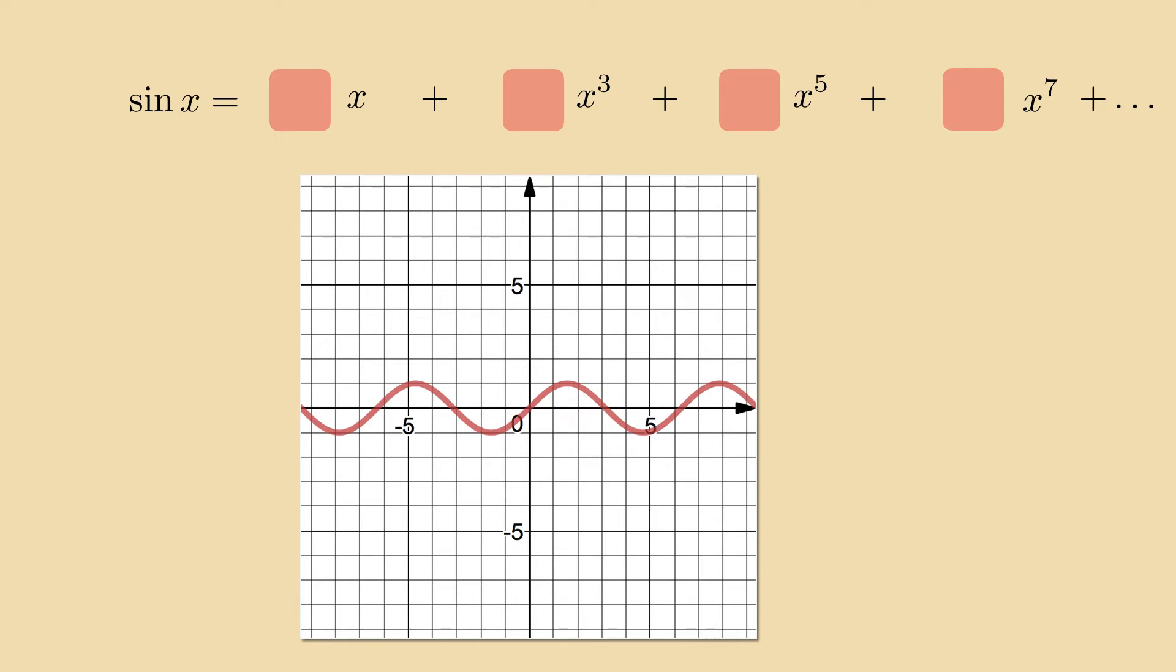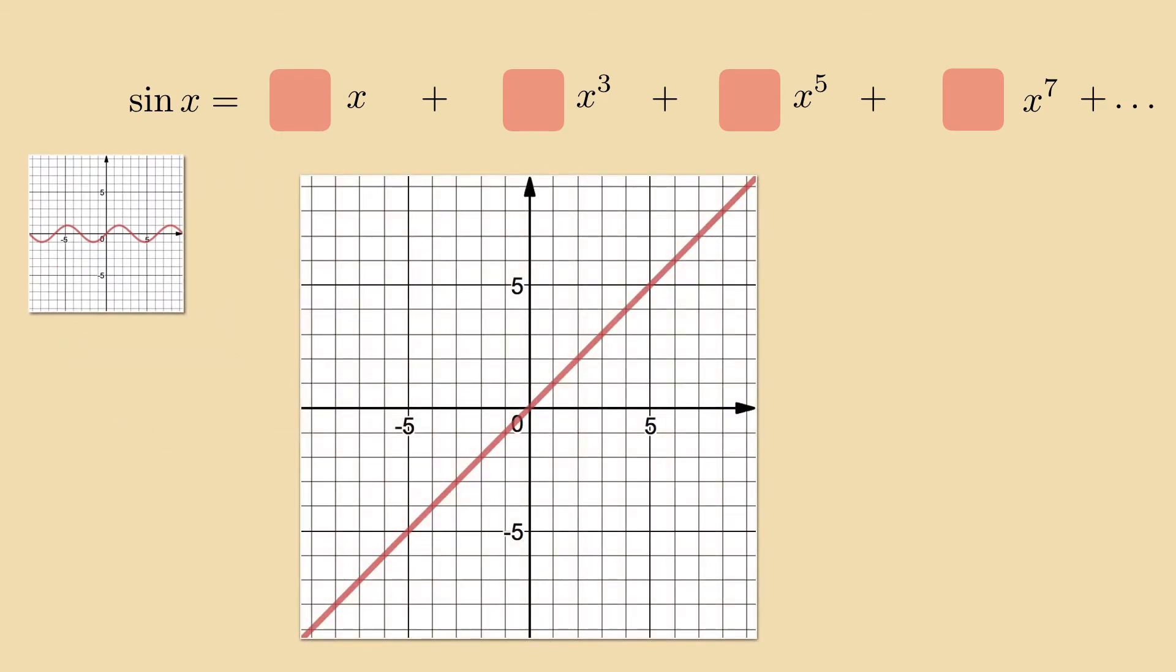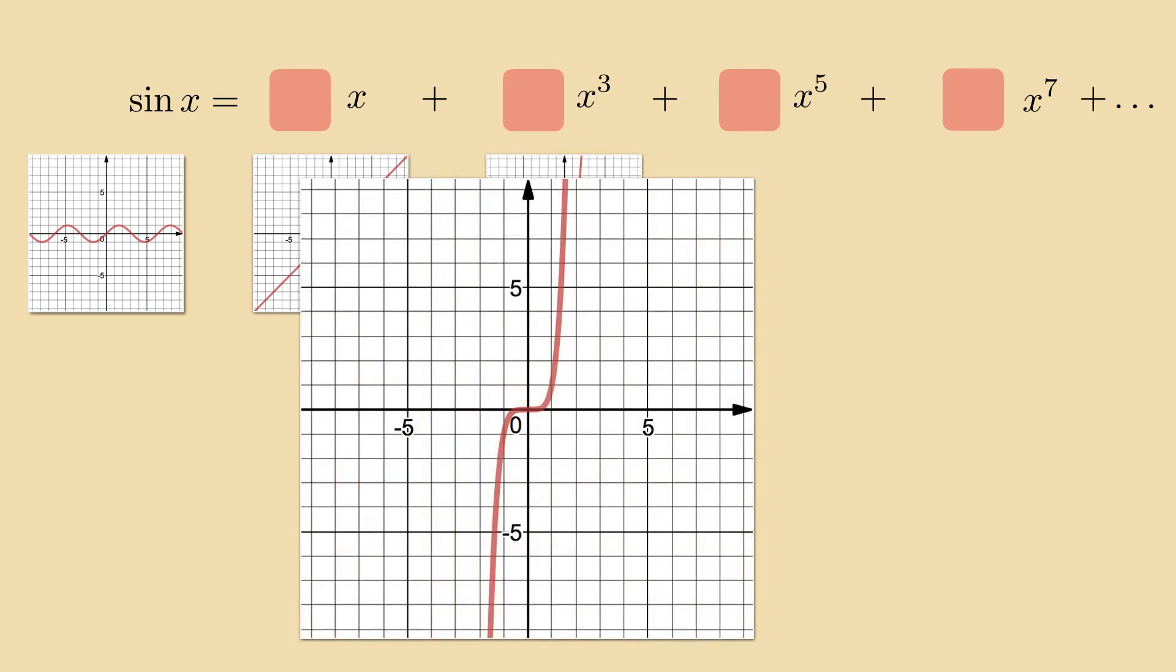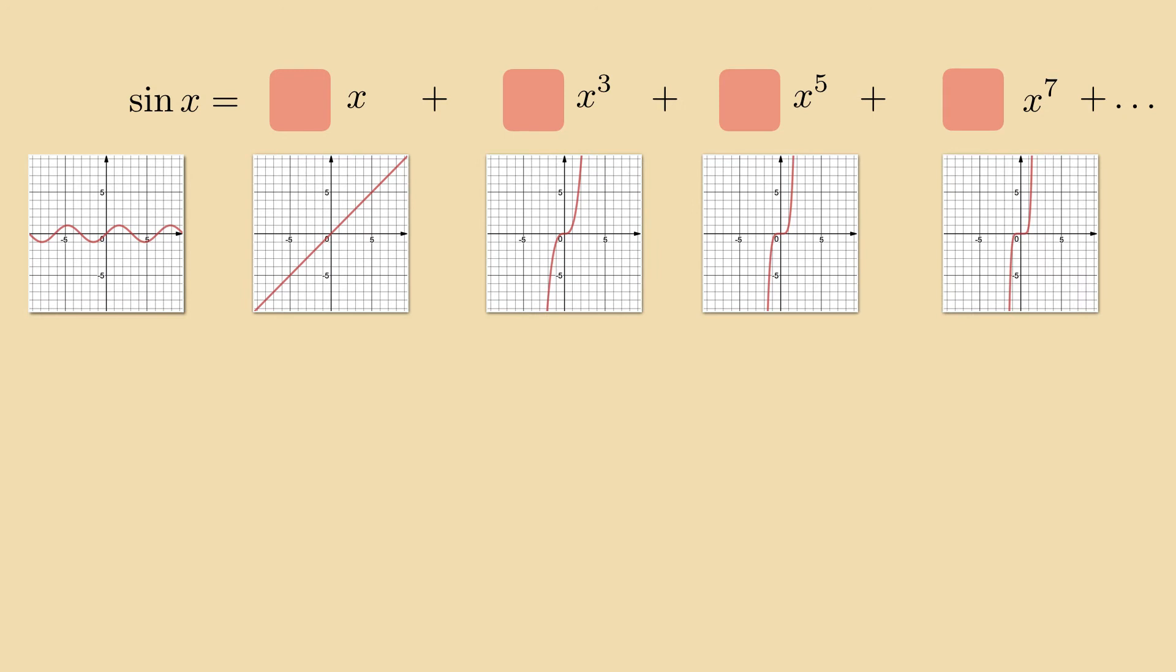Think of the sine as a polynomial with an infinite number of roots. Then this polynomial's degree must also be infinite. We only include odd powers of x because of the symmetry of the graph. Sine is point symmetric around the origin, therefore we only use those powers of x whose graphs have the same point symmetry. They look nothing like this sine function, but the as yet unknown coefficients will straighten them out.